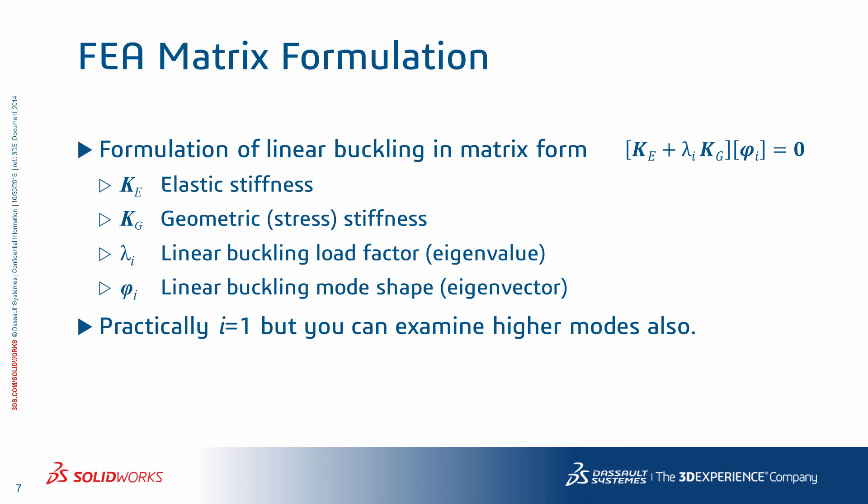The formulation of linear buckling in matrix form in the context of finite element analysis can be written as an eigenvalue problem where K_e is the elastic stiffness matrix, K_g is the so-called geometric stiffness matrix which is a function of the stresses induced by the applied load. The unknowns are lambda as the linear buckling load factor or eigenvalue, and phi being the displacement or eigenvector. These are calculated for mode i equal to 1 from a practical point of view, but can be calculated for higher number of modes as well.